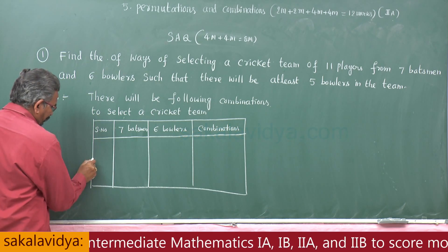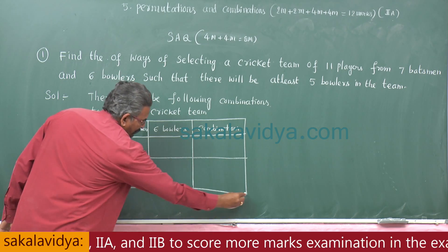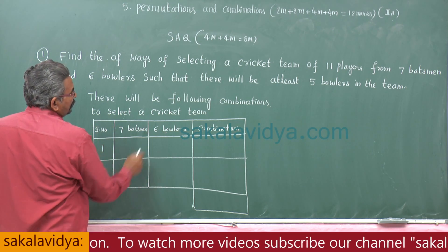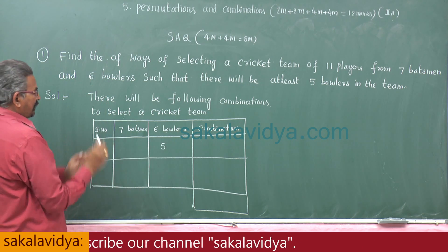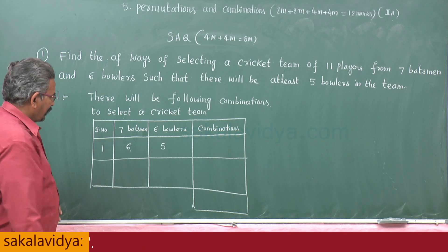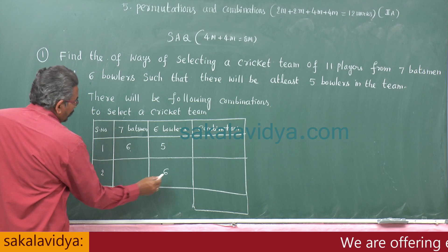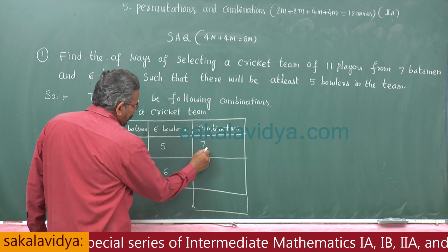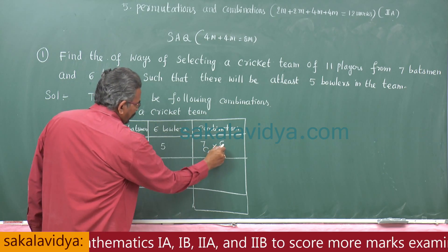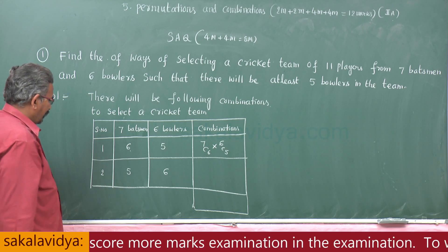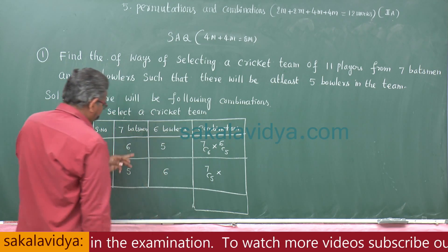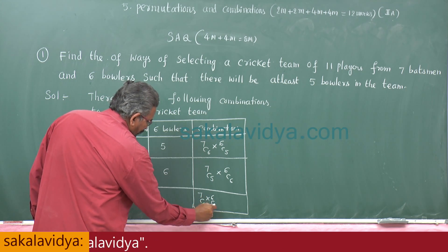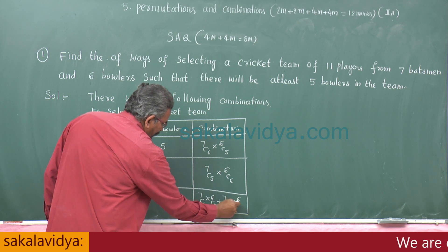First combination: how many bowlers do we select? 5 bowlers — that means 6 batsmen from the remaining. Second combination: 6 bowlers, select 6 out of 6, and 5 batsmen. So 6 batsmen can be selected from 7 as 7C6, and this gives 7C6 × 6C5, or 7C5 × 6C6. Total number of ways: 7C6 × 6C5 plus 7C5 × 6C6.